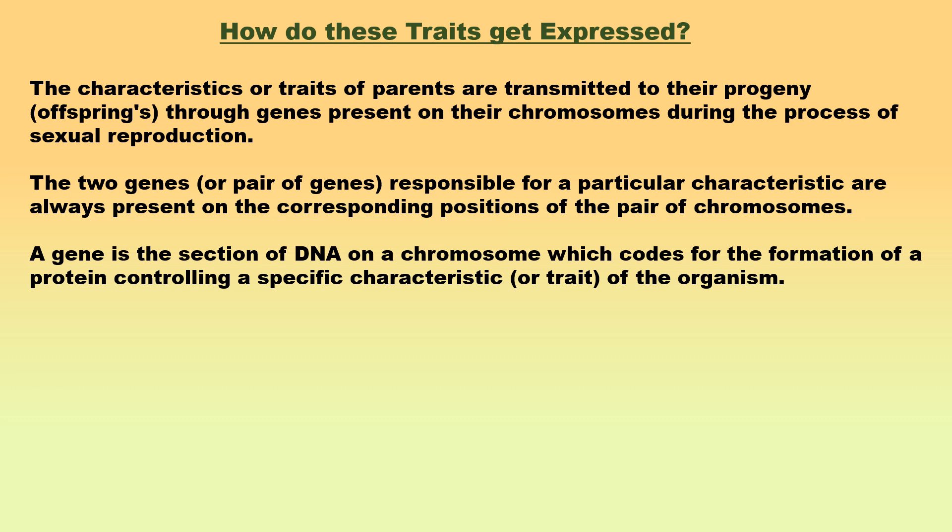Thus, the male gamete and female gamete each carry one gene for each characteristic from the gene pairs of parents, located on the pair of chromosomes. When a male gamete fuses with a female gamete during fertilization, they make a new cell called a zygote with a full set of genes on a full set of chromosomes. This zygote grows and develops to form a new organism having characteristics from both parents, which it has inherited through genes. A gene is the section of DNA on a chromosome which codes for the formation of a protein controlling a specific characteristic or trait of the organism.